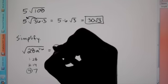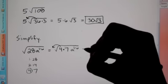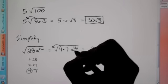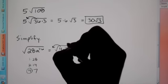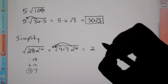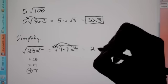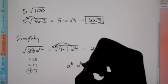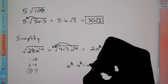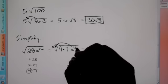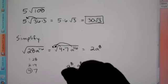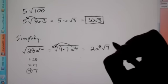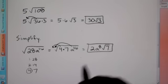We take the square root of 4, which is 2. For variables, when you take the square root you simply cut the exponent in half — so a^16 becomes a^8 outside the root, because a^8 × a^8 = a^16. We're still left with √7 inside, so the final answer is 2a^8 √7.